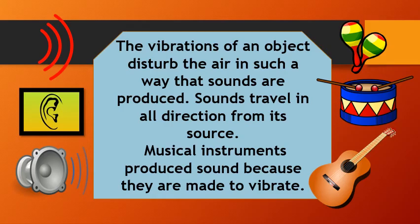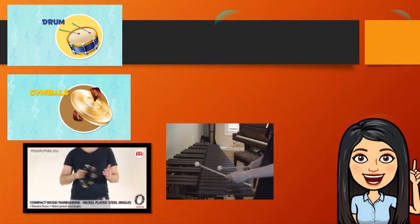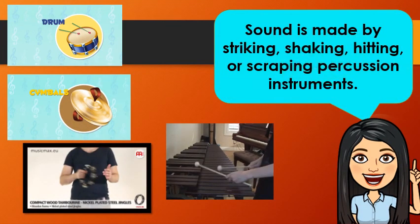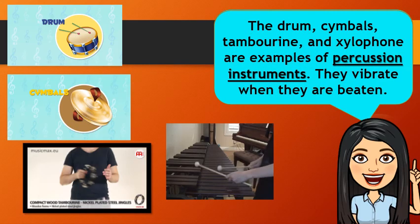Musical instruments produce sound because they are made to vibrate. Sound is made by striking, shaking, hitting, or scraping percussion instruments. The drums, cymbals, tambourine, and xylophone are examples of percussion instruments. They vibrate when they are beaten. Let's hear their sounds.